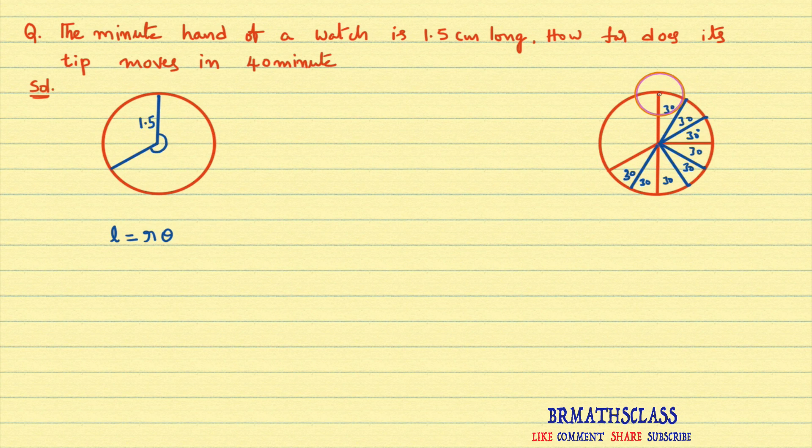If the tip moves for 15 minutes, this is 90 degrees. If the tip moves for 30 minutes, then this is 180 degrees. 180 plus another 10 minutes. If you observe here, for 15 minutes it's 90 degrees, so for 5 minutes it's 30 degrees.